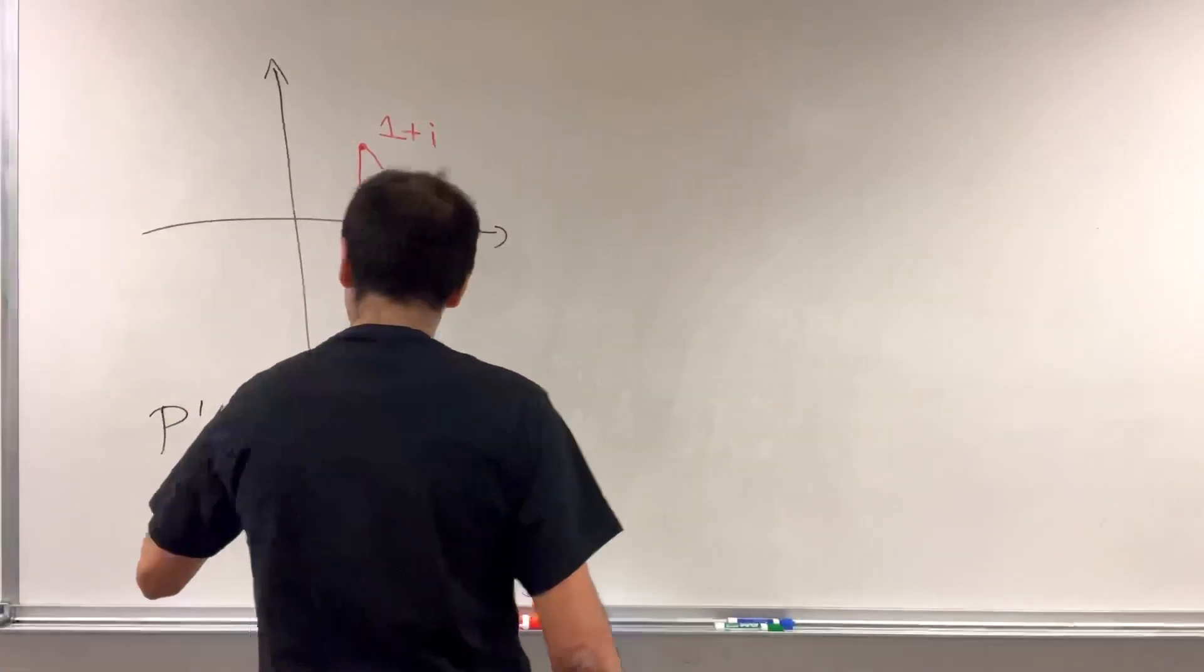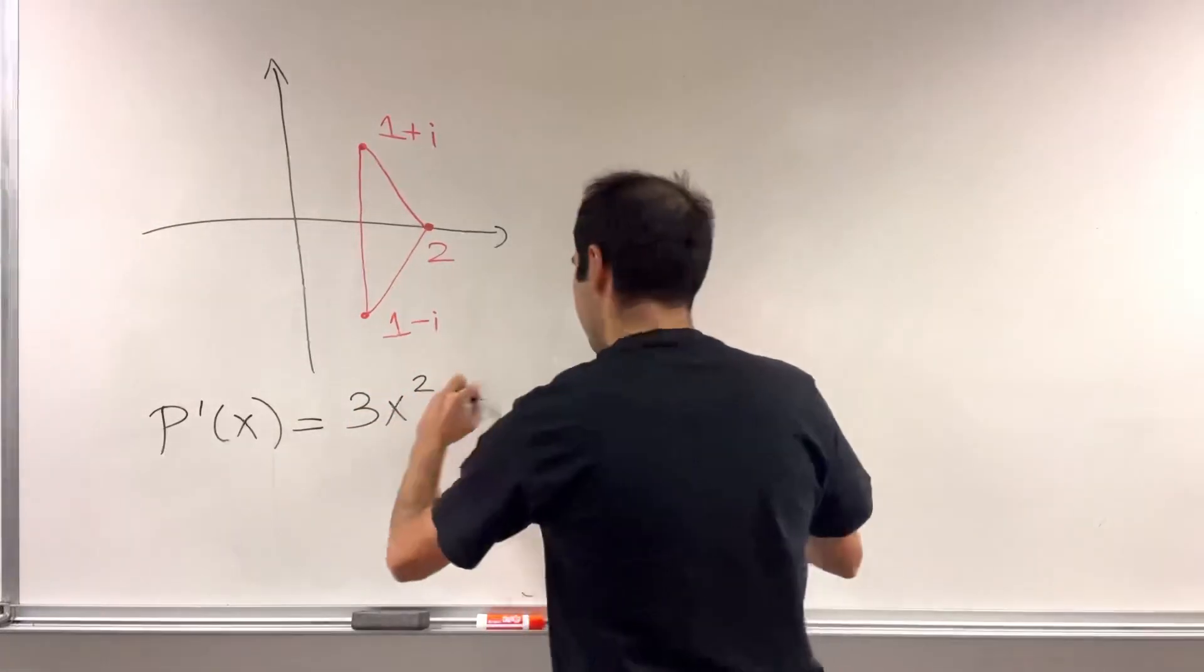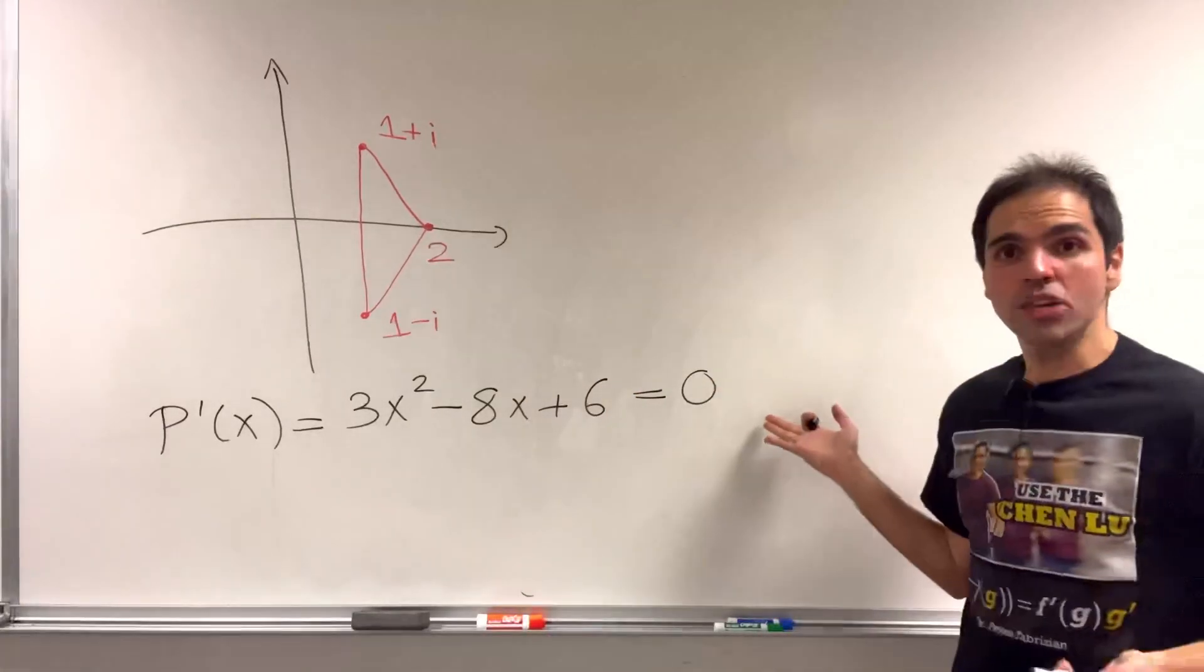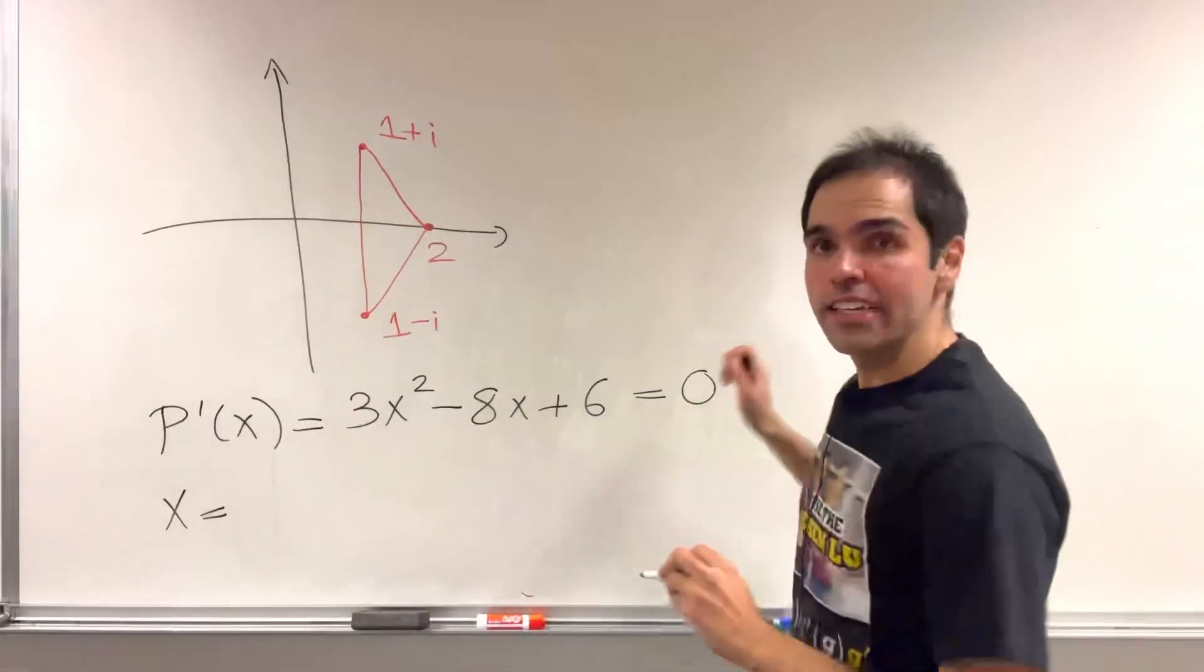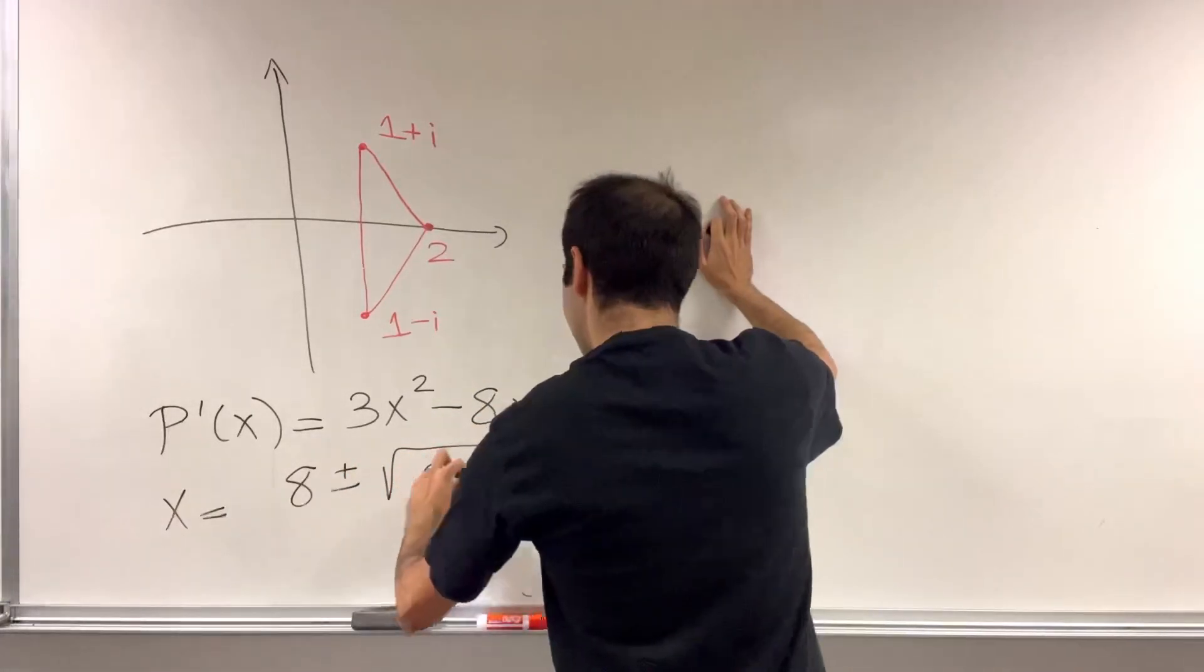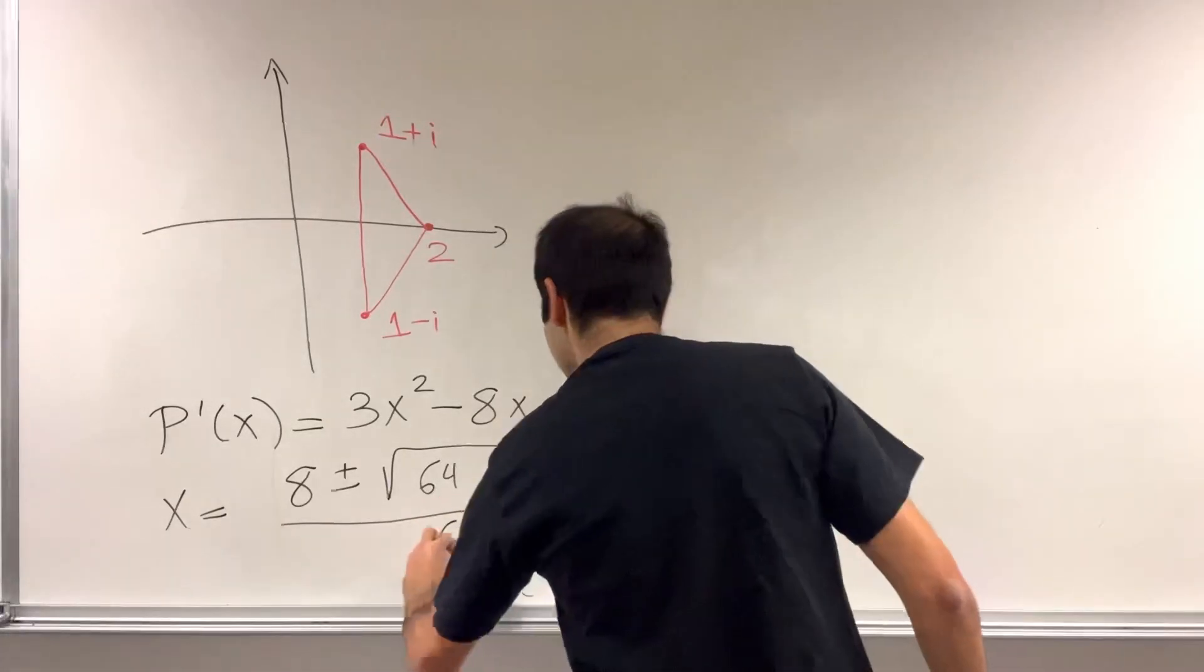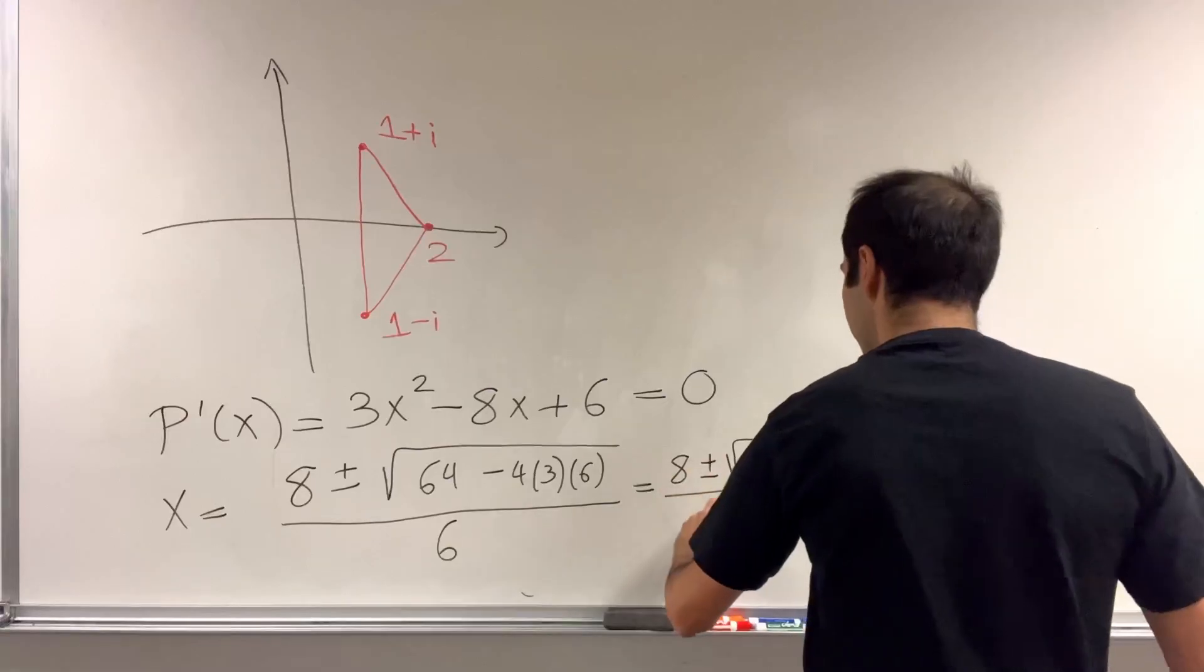Because the derivative, I think we have the x³, so 3x². And then we have a -4x², so -8x. And then we have, I believe, a 6x, which gives you 6. And the constant term, which gives you 0. So if you set this equal to 0, you can then use the quadratic formula, which says that x is 8 ± √(64 - 4 × 3 × 6) over 2 times 3, which is 6. Which simplifies quite nicely. It's 8 ± √(-8) over 6.